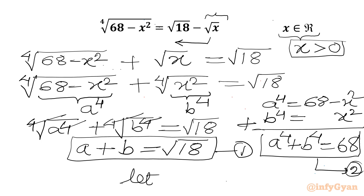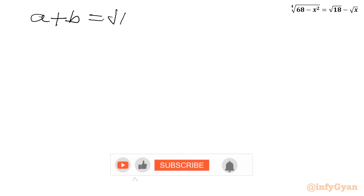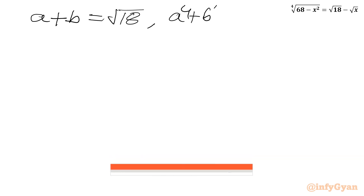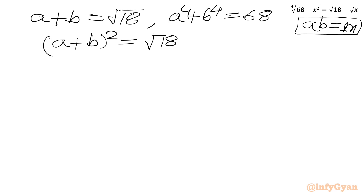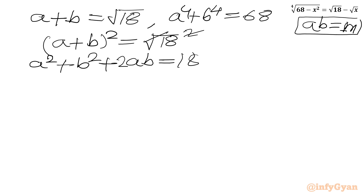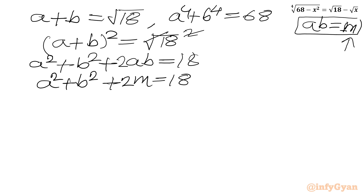Now let's assume ab equal to m. We have equation 1: a plus b equal to square root of 18, and equation 2: a⁴ plus b⁴ equal to 68, with ab equal to m. Squaring equation 1: (a+b)² equals 18, so a² plus b² plus 2ab equals 18. Since ab is m, we get a² plus b² plus 2m equal to 18, so a² plus b² equal to 18 minus 2m.